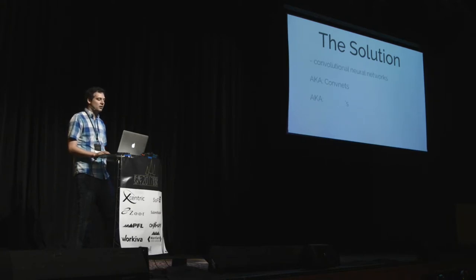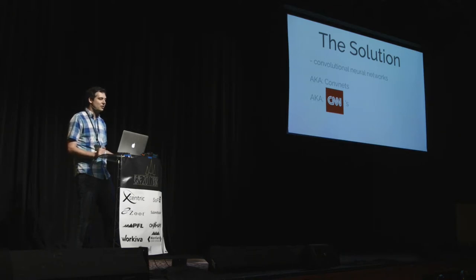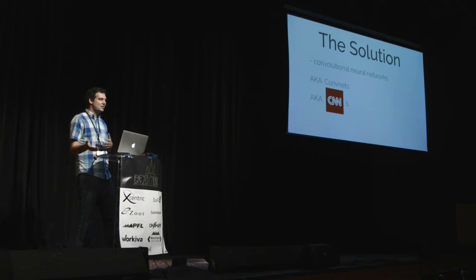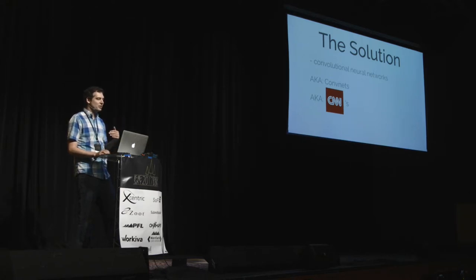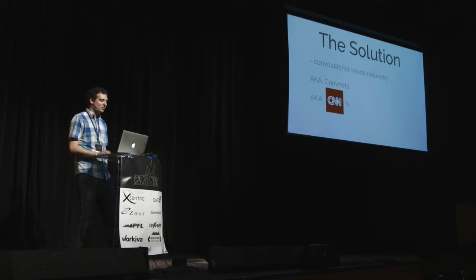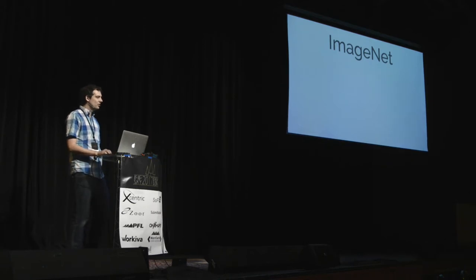The solution that has been really popular in the last few years is what's called a convolutional neural network — you'll hear these called ConvNets or CNNs. These have really been a pretty big breakthrough. The first convolutional neural network came out in 1998, but at the time we really couldn't train deeper networks so it didn't get much attention. Once some of these deep learning breakthroughs came, people went back and said this is actually a great way to handle some of these problems.